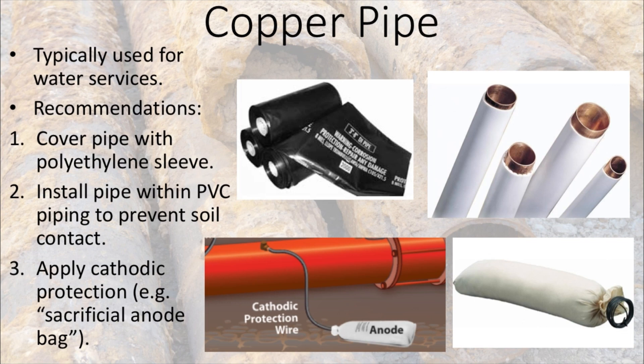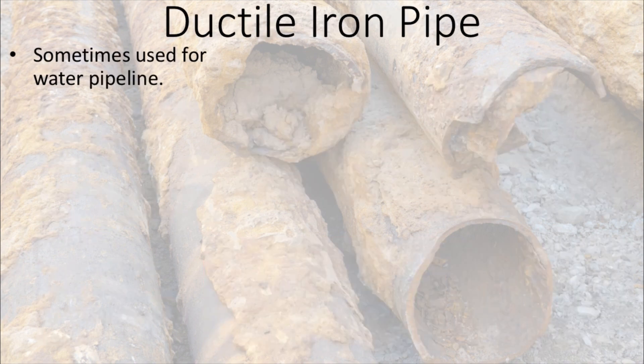Another recommendation is applying cathodic protection such as a sacrificial anode bag. Typically the metal pipe acting as the anode is the corroding metal, because it's giving off ions that are transferred to the cathode. By placing a sacrificial anode bag and connecting it with a wire, it will take the attack and corrode rather than the actual metal pipe.